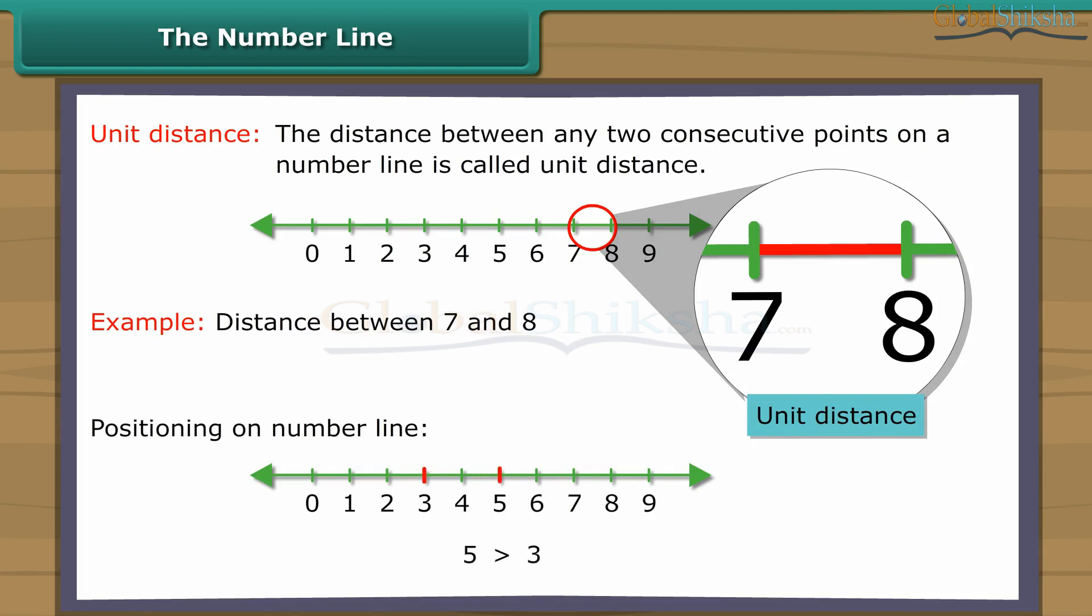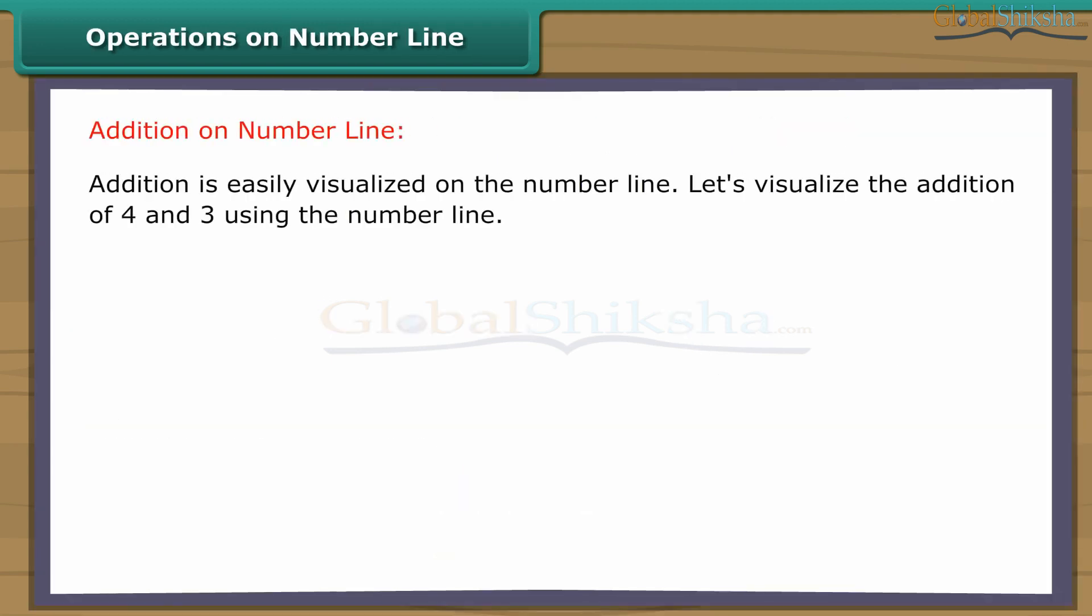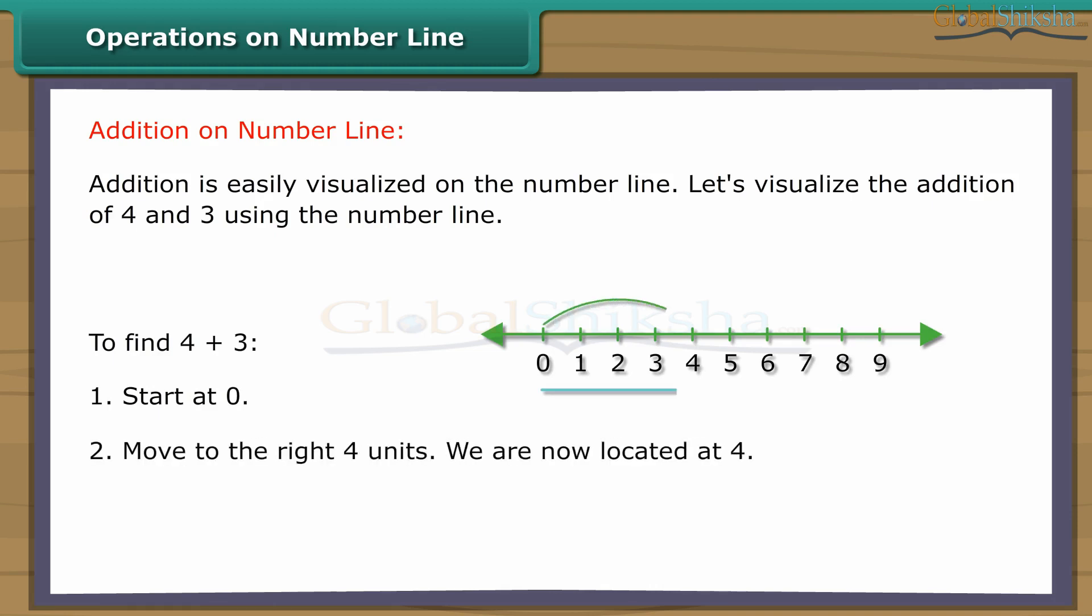Operations on number line. Addition is easily visualized on the number line. Let's visualize the addition of four and three using the number line. To find four plus three: One, start at zero. Two, move to the right four units. We are now located at four. Three, from four, move to the right three units. We are now located at seven. Thus, four plus three is equal to seven.